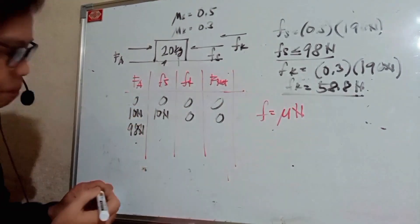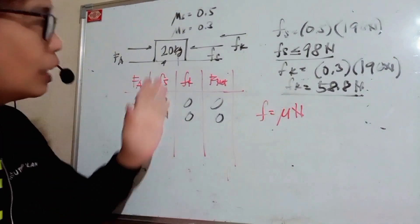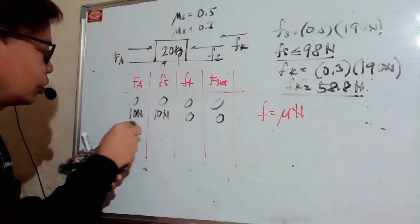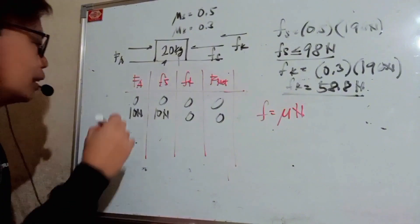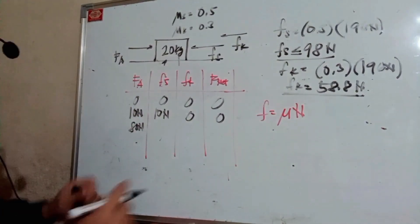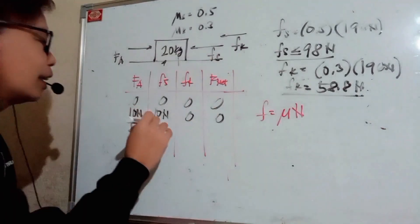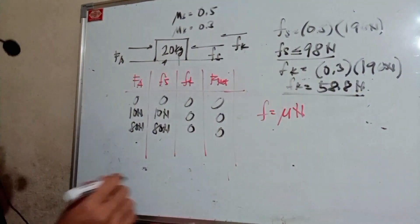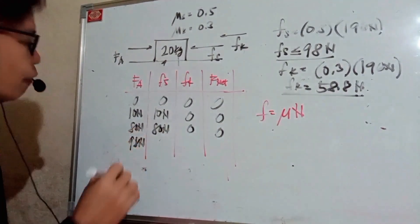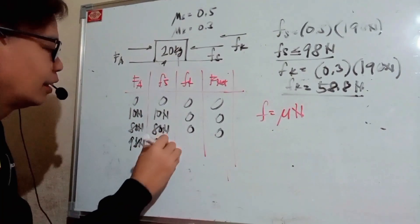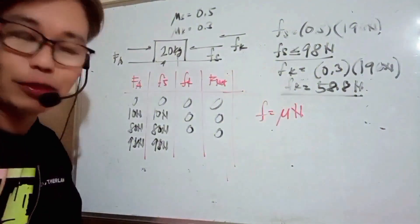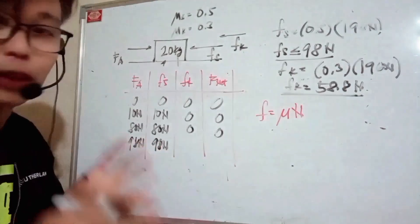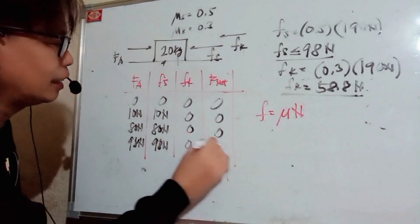If the force you apply is 80 newtons — which is still below the threshold of 98 — the static friction will match it and also be 80 newtons, kinetic is zero, and net force is zero. Now if you reach exactly 98 newtons, static friction is still 98 here, there's no kinetic friction since the object hasn't moved yet — you've just matched the static friction threshold — so net force is still zero.